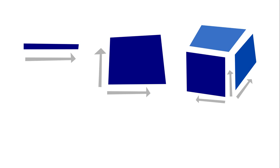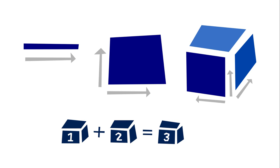In cubical type theory, we can talk about lines, squares, cubes, and all hypercubes natively. Everything is a cube. For example, the natural numbers are cubes, and the addition operation gives you a number cube out of two number cubes. Even the type of natural numbers is a cube. Everything is a cube in cubical type theory.